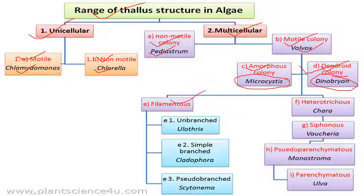Then we have filamentous forms, which are all multicellular algae. A filament which is unbranched — thread-like structure — example is Ulothrix and Oedogonium. Then we have simple branched with true branches, example is Cladophora. Then pseudo-branched, example is Scytonema. Then heterotrichous, example is Chara. For brown algae, example is Ectocarpus.